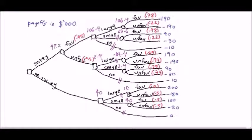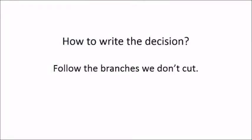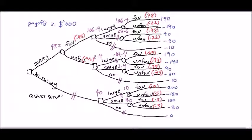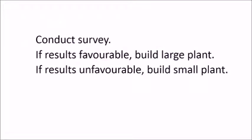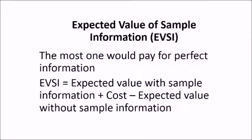Between 49.2 and 40, 49.2 is bigger. Choose the branch conduct survey. We follow the branches we don't cut. The decision is to conduct the survey. If results are favorable, build large plant. If results are unfavorable, build small plant.